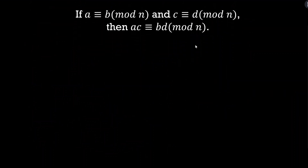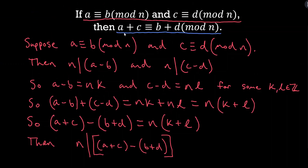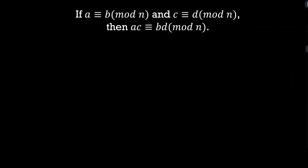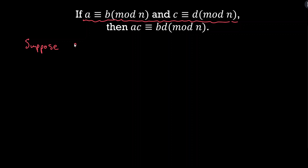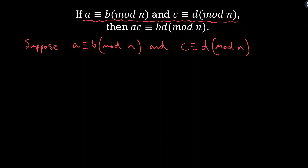Awesome. Let's try the last example: if A is congruent to B mod N and C is congruent to D mod N, then A times C is congruent to B times D mod N. This is almost the same as the last statement — in the last statement we added A and C, and B and D, and said those are congruent. Now we're multiplying.